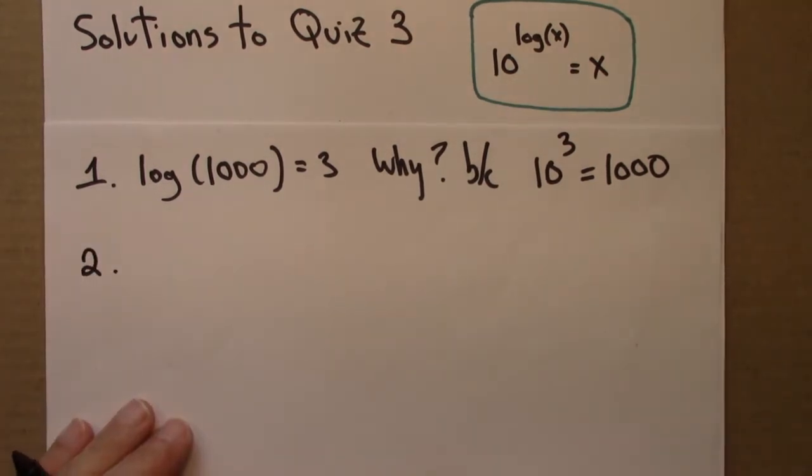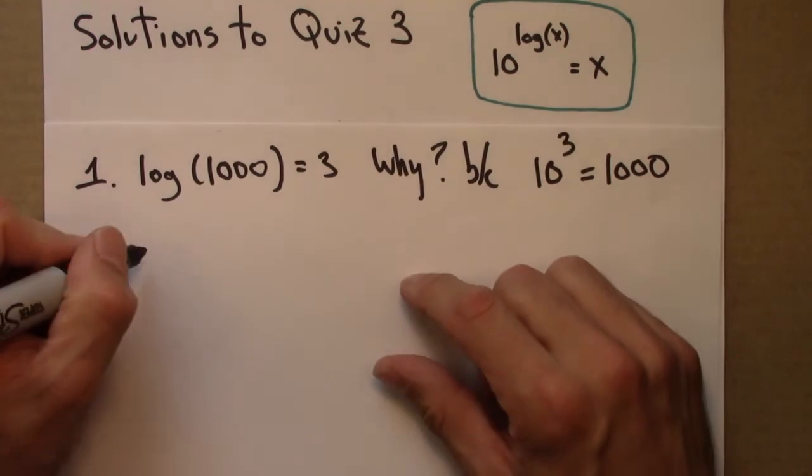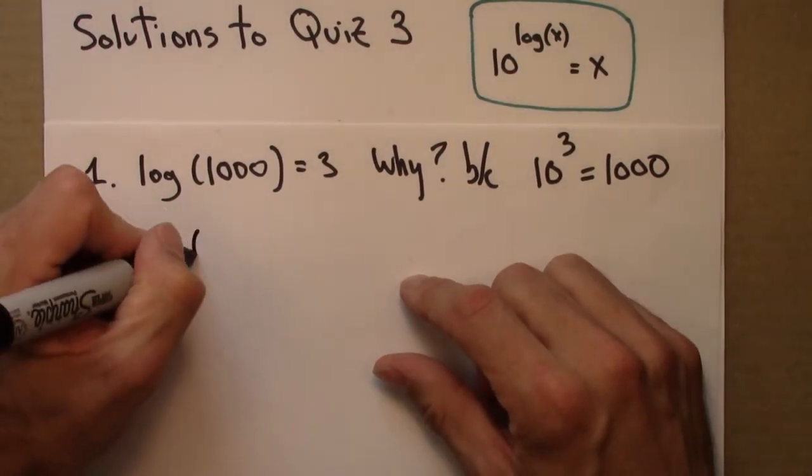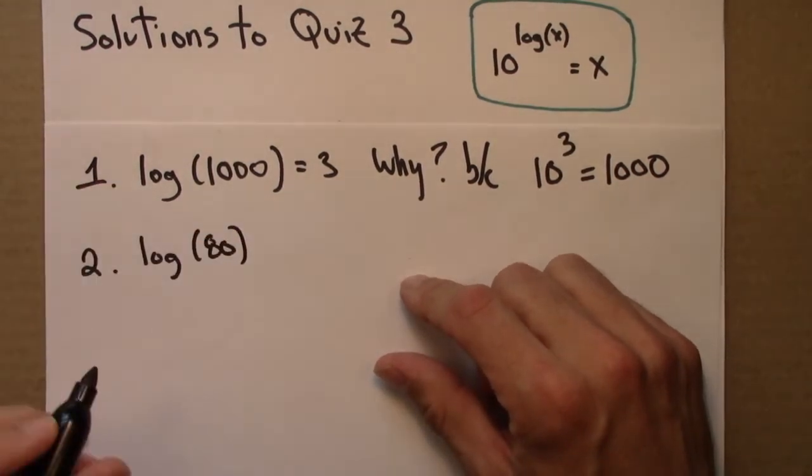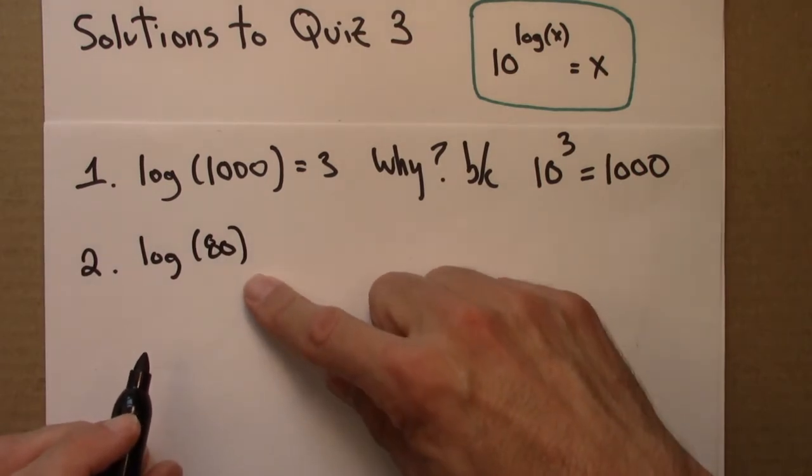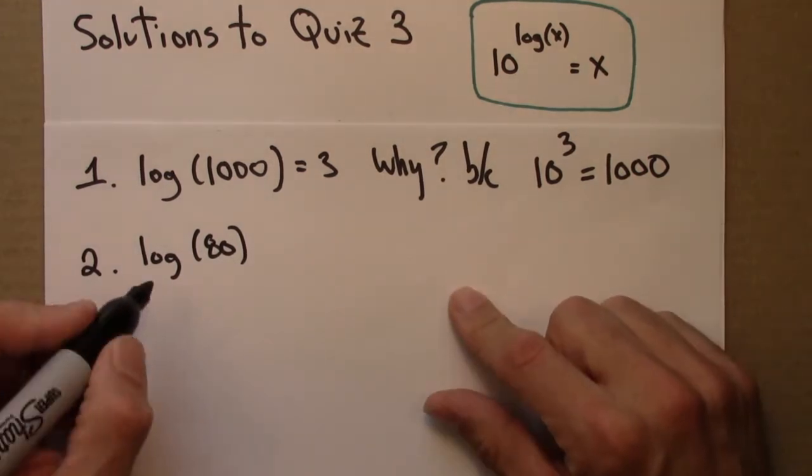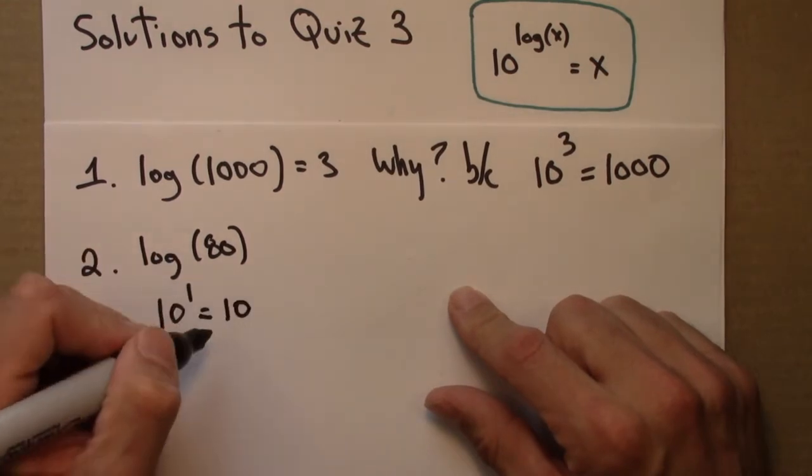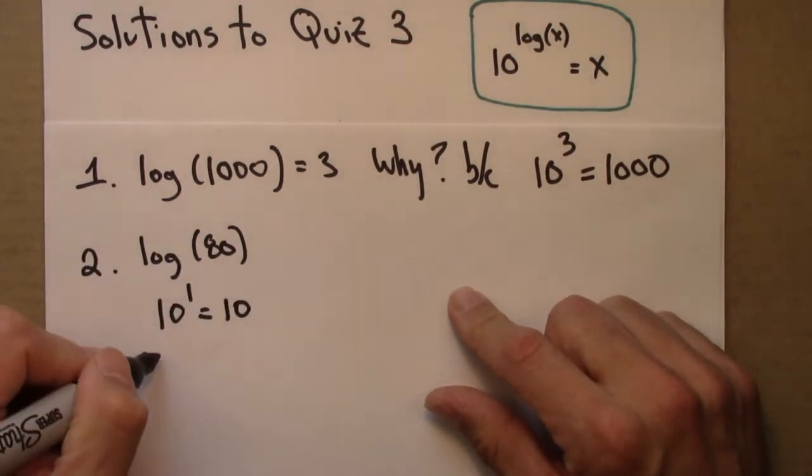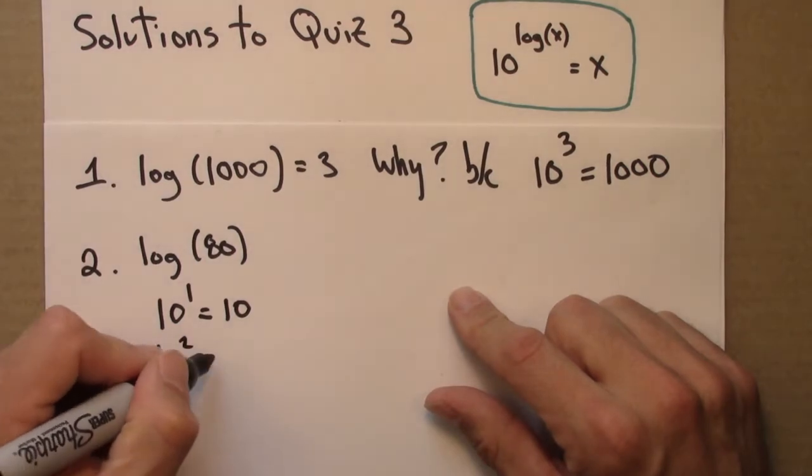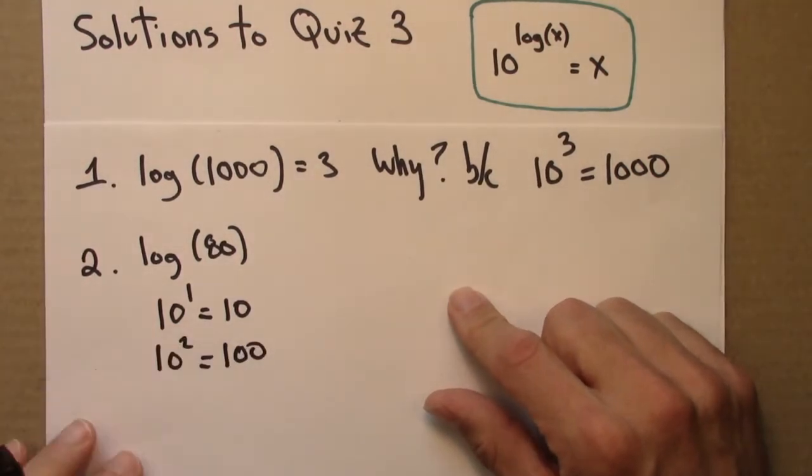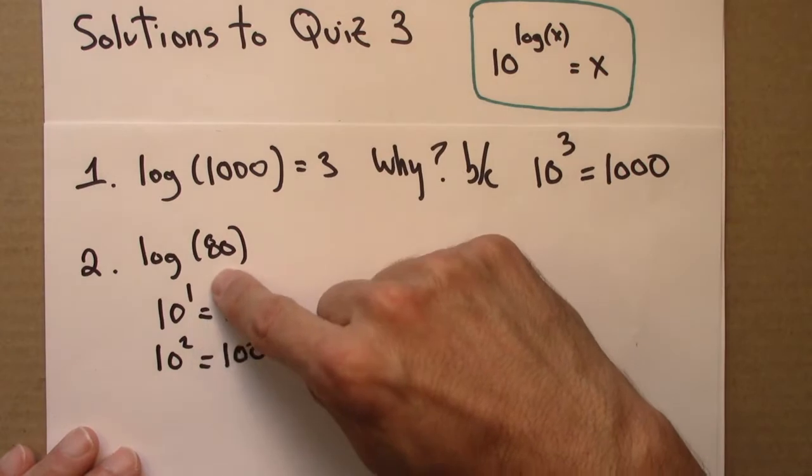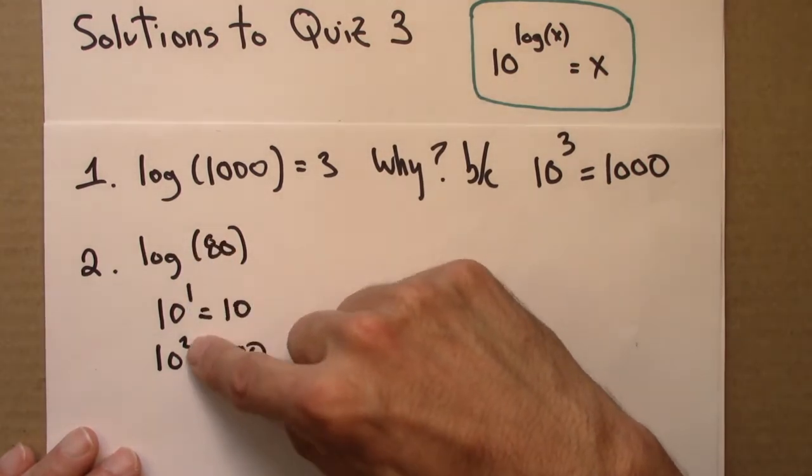The next question is log 80. What's that between? So I claim that's between 1 and 2. 10 to the 1 is 10, and 10 to the 2 is 100. So if I want to get 80, I'll need an exponent between 1 and 2.